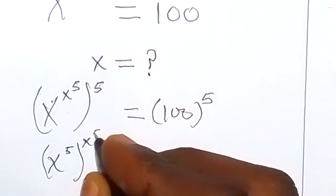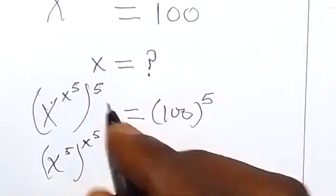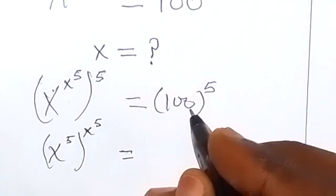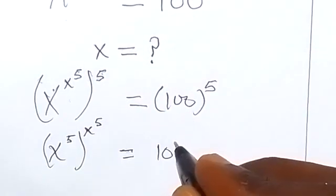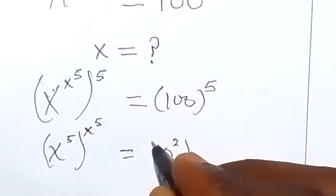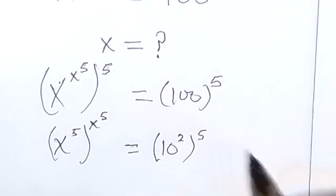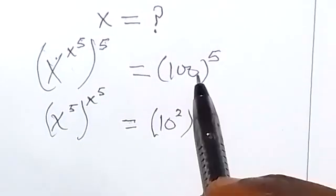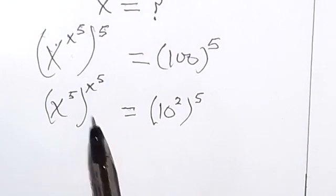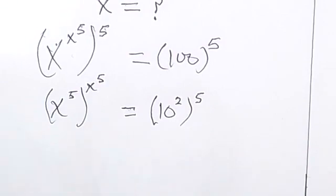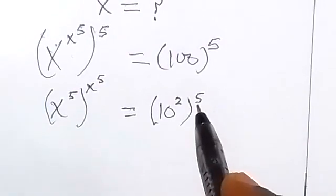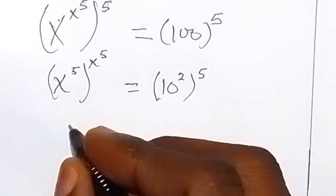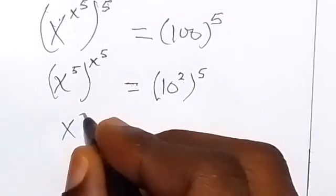We switch this one, then equals to here we can make 100 to be 10 raised to power 2, then raised to power 5. So what we did there: 10 squared is 100. Then from here now we can open this, because 5 here can multiply 2, and we still have x raised to power 5.